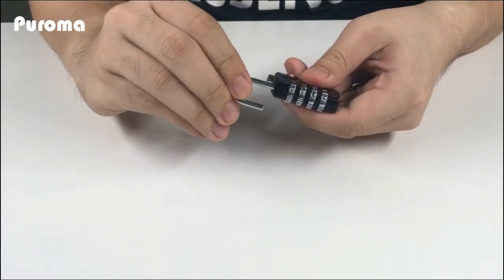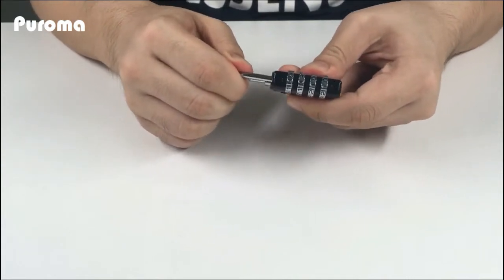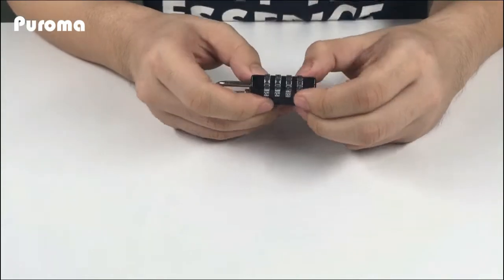And now, rotate the shackle back. The combination has been set successfully, and the original combination doesn't work anymore.